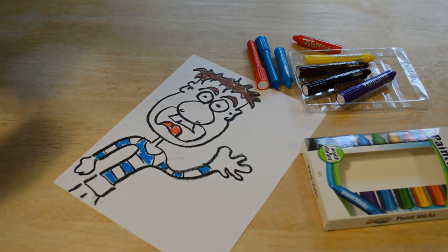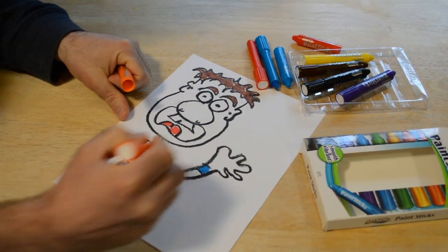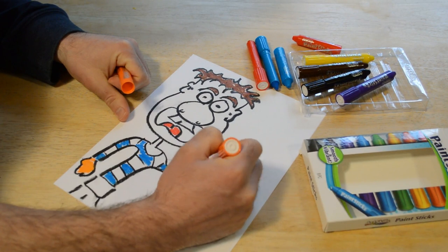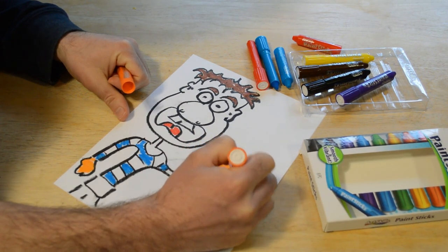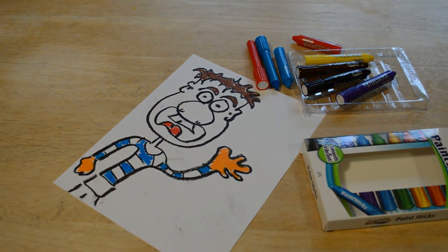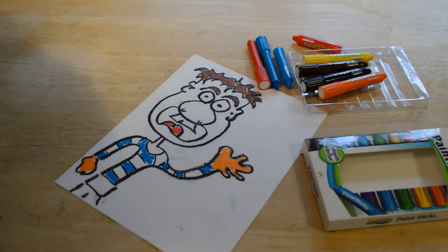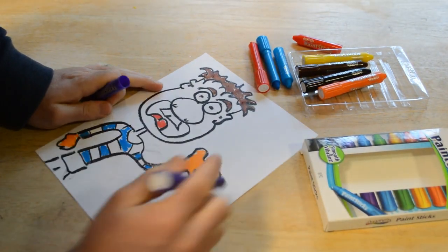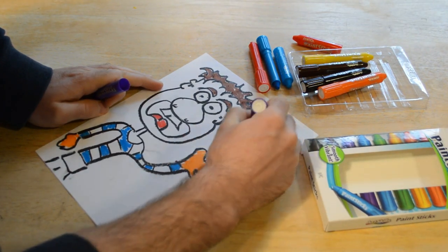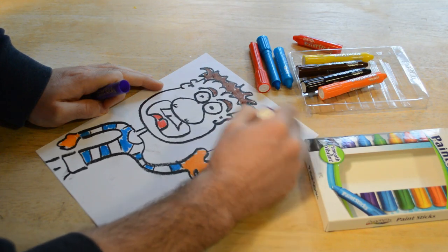All right, what else should we do? Maybe this guy's wearing gloves. Let's add some orange, these are orange gloves, mittens. Show you some of the color.